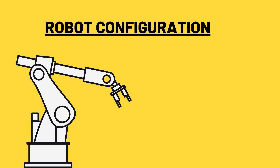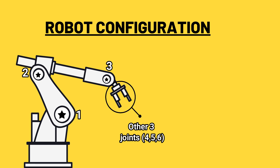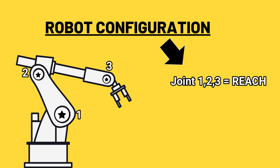A typical robot requires six degrees of freedom in 3D space. The first three joints help in reach and the other three joints are in the wrist for orientation. However, the configuration is based upon the first three joints only, that is the joints helping in the reach of the robot.